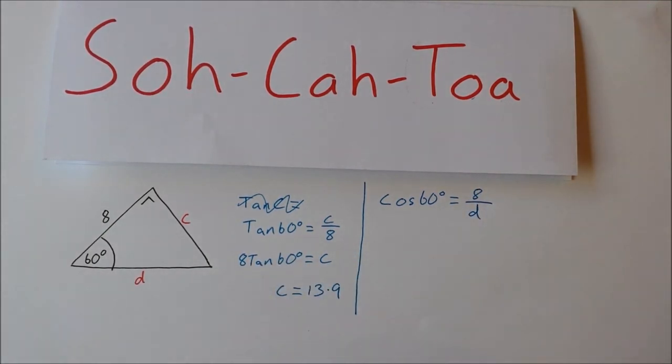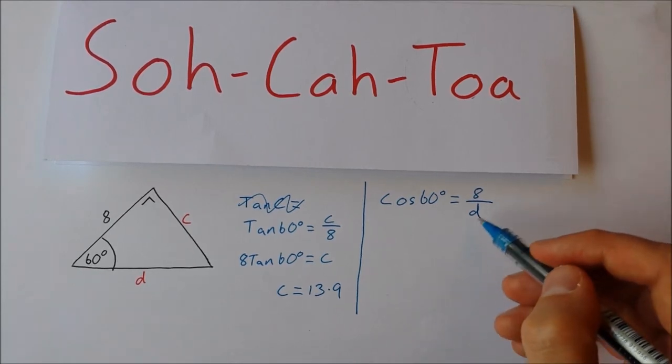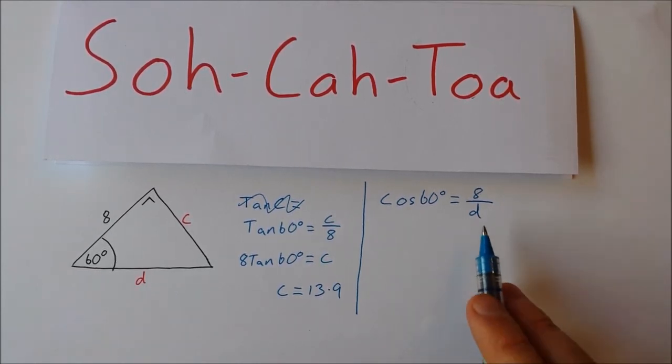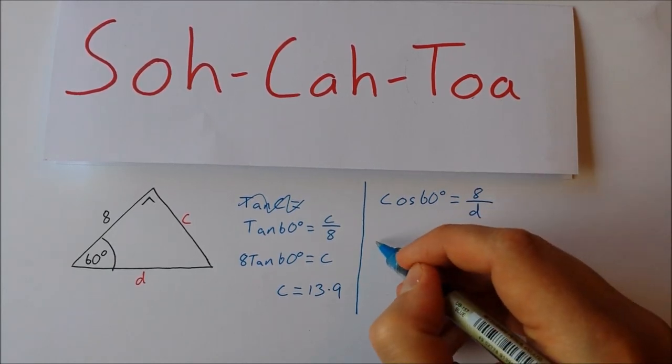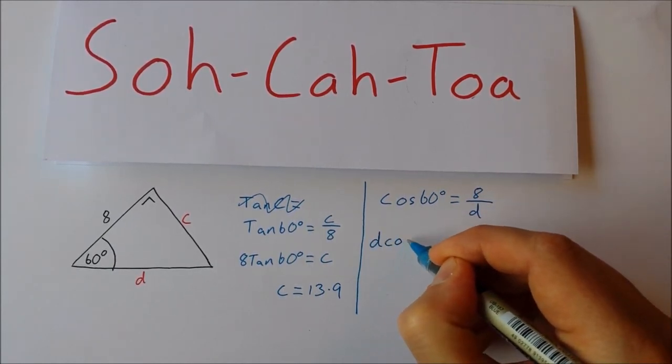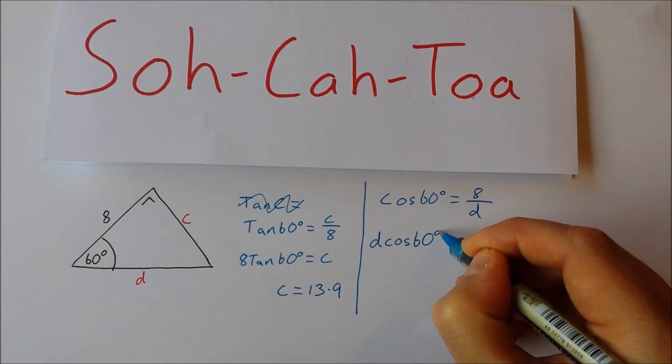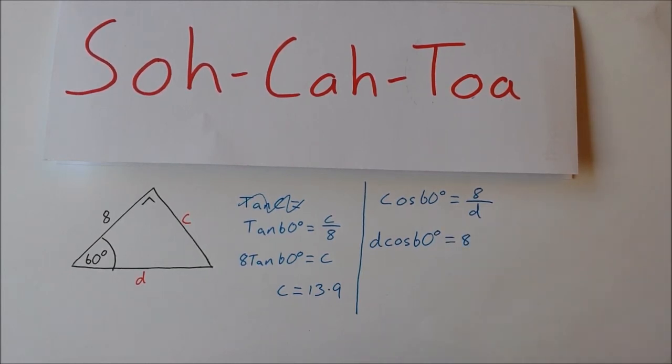So the cosine of 60 degrees is equal to adjacent 8 over hypotenuse 'd'. Now this just takes two steps to isolate 'd'. First step is to get rid of the fraction, so I'm going to multiply across by 'd'. Cos 60, so I get d cos(60°) = 8.